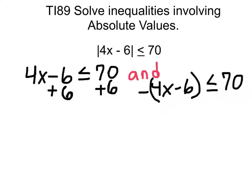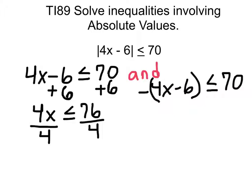Solving for the first inequality, we'll add 6 to both sides. That gives us 4x is less than or equal to 76. Divide both sides by 4 — these 4s cancel out, and that gives us x is less than or equal to 19.